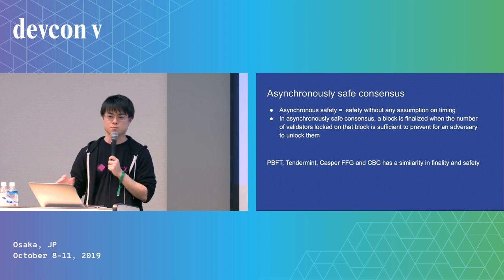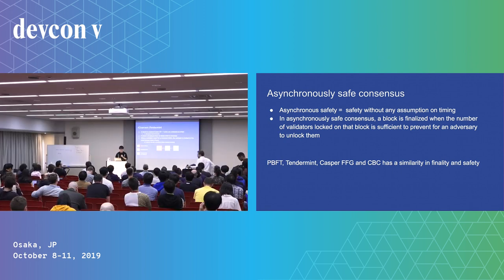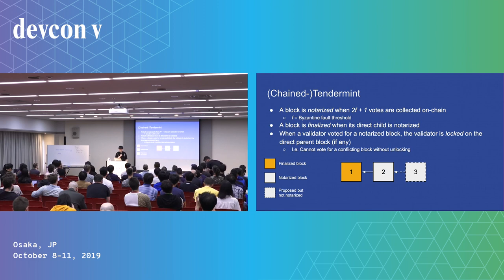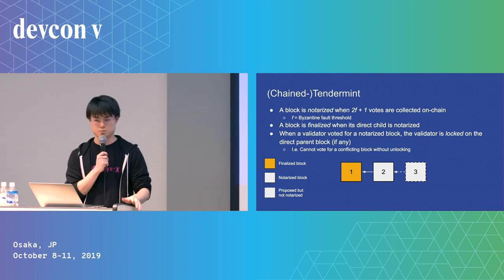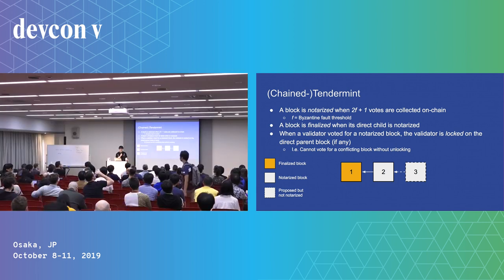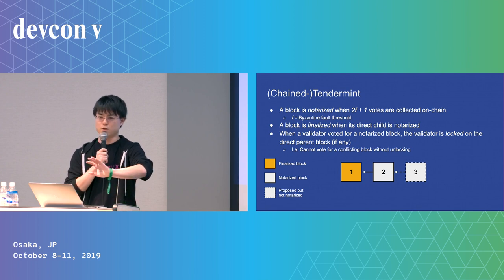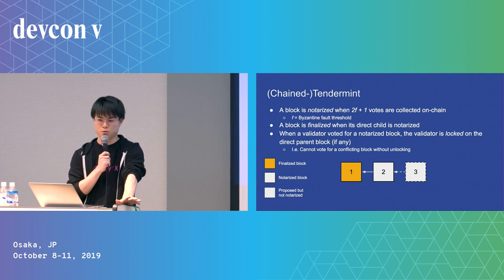In these protocols, finality comes when a sufficient number of validators is locked on a block. In Tendermint, a block is called notarized when 2F+1 validators have voted on it, where F is the Byzantine fault threshold. The block is finalized when its direct child block is notarized. When a validator votes for a notarized block, that validator is locked on the block and cannot vote for a conflicting block.